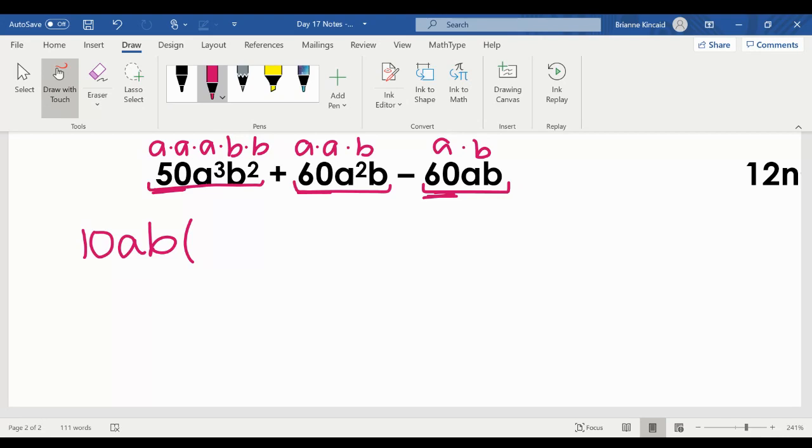From the first term, 50 divided by 10 is going to give me five. I've taken one a away. That means I have two left. And I've taken one b away, that means I have one left. From the middle term, 10 out of 60 is going to be six. I take one a away, so I'm left with 6a. And I take that b away, so there's no b in that second term anymore. And from the third term, I'm going to take out the 10 again. That's going to leave me with negative six. I take out the a, so it's no longer there. I take out the b, so it's no longer there.